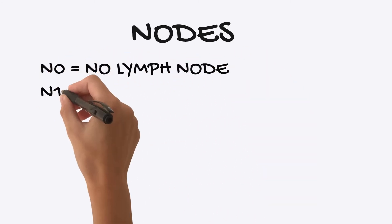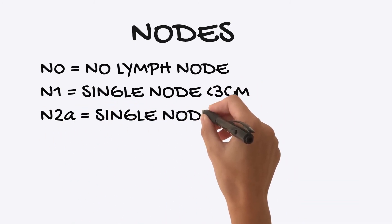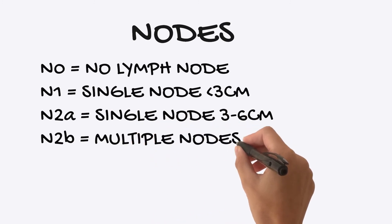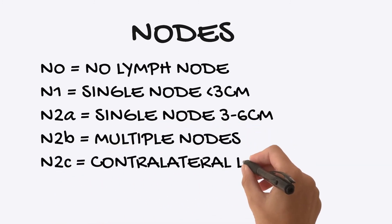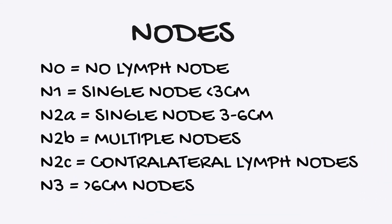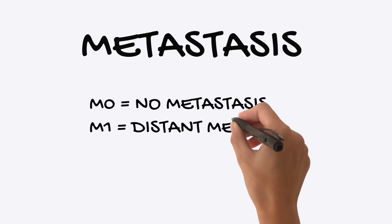N relates to cervical lymph nodes. N0 — no cervical lymph nodes involved. N1 — a single node less than 3 cm. N2A — a single node between 3 and 6 cm. N2B — multiple nodes. N2C — contralateral lymph node involvement. N3 — a node greater than 6 cm. M relates to metastases: M0 is no metastases, and M1 is distant metastases present.